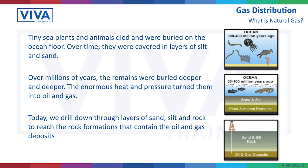They've been doing it for a great number of years. Today, we drill down through layers of sand, silt and rock to reach the rock formations that contain the oil and gas deposits, and then we extract them. The oil goes to form things like petroleum and coal tar. And the gas, after it's been refined, we use as natural gas for our cookers, our boilers and our appliances.